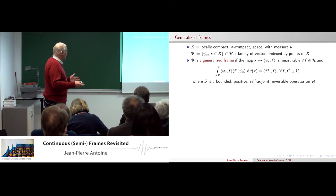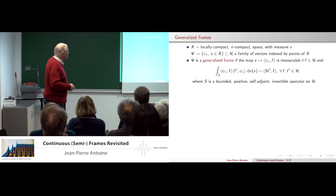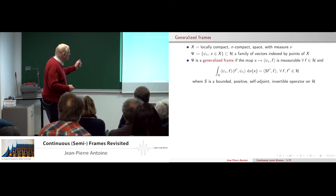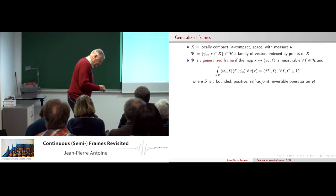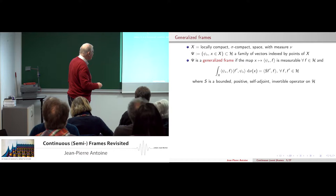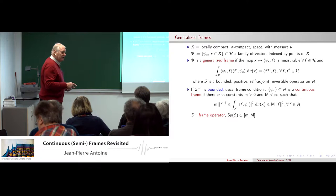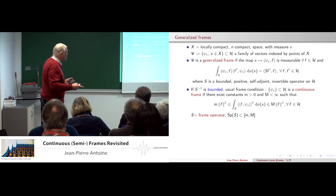If you define a generalized frame: you have a locally compact, sigma-compact set with a measure — you can integrate on it, call it X with measure nu. You have a family of vectors indexed by points in that space, and you say that family Psi is a generalized frame if the map from X to the inner product is measurable and you have this relation where S is bounded, positive, self-adjoint, and invertible. You say nothing about the inverse. If the inverse is bounded, you are back to frames.